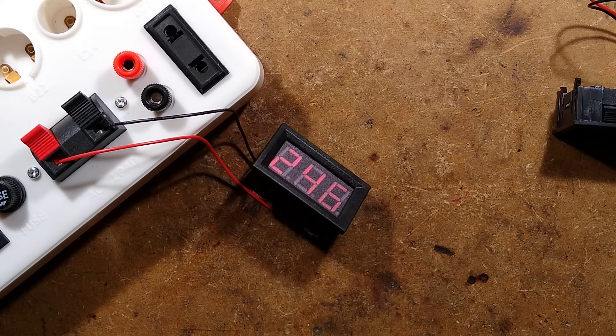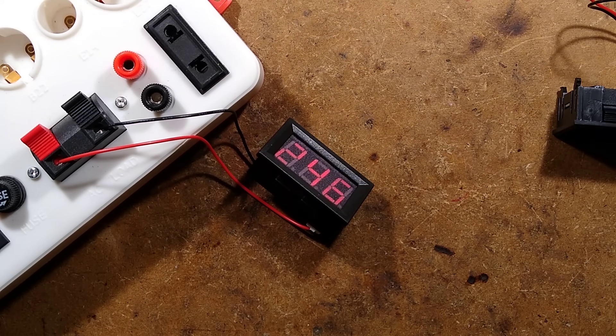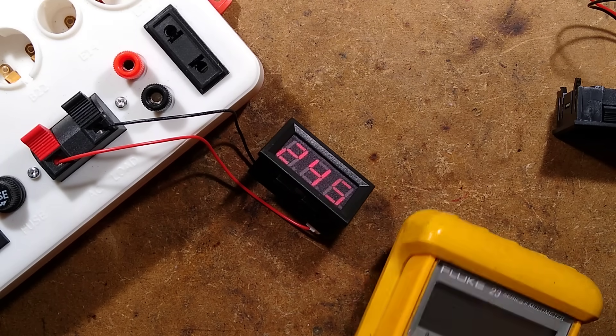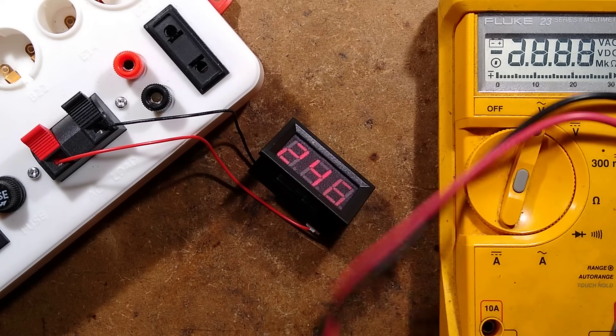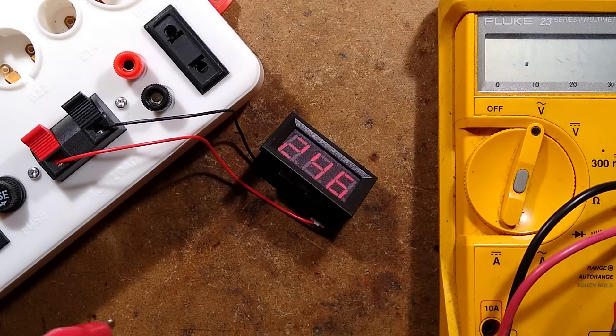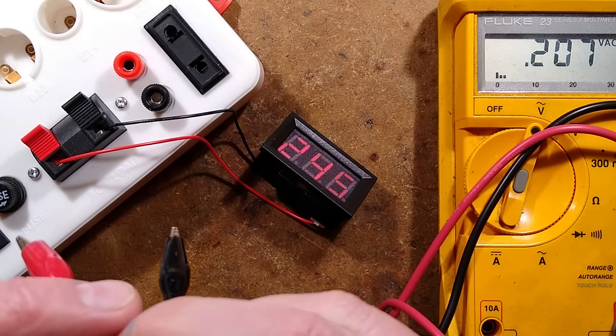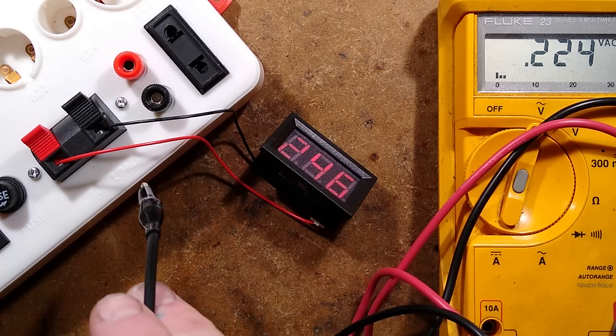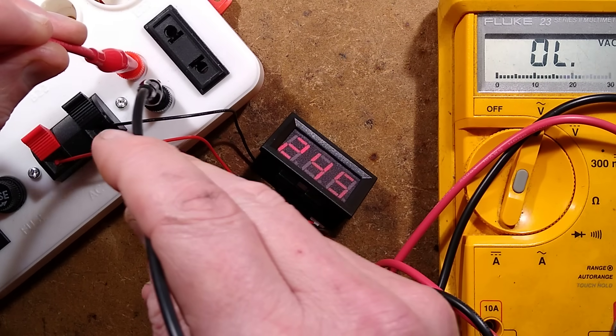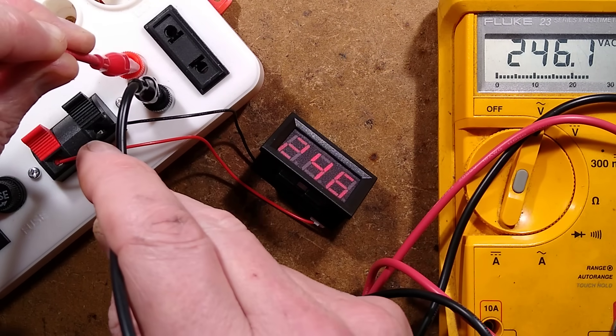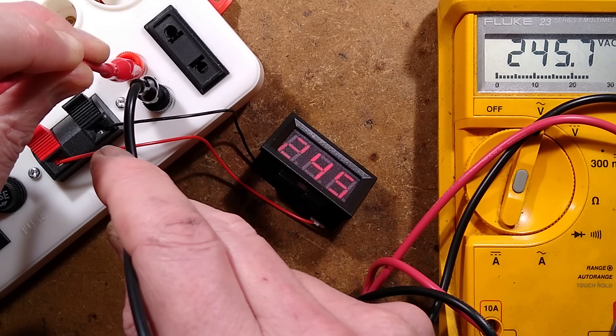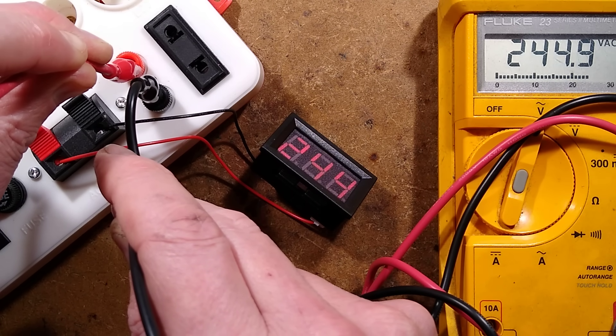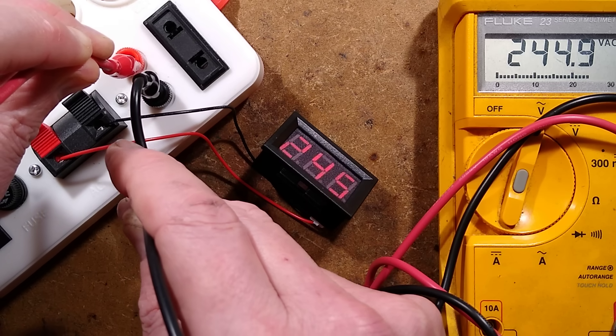Let's get the Fluke meter in, which has croc clips attached at the moment, and I'll set it to AC volts. I'll just stuff these crocodile clips into this connector here and the Fluke meter says 246. That display down there says 246 as well, they seem to be matching up fairly accurately.